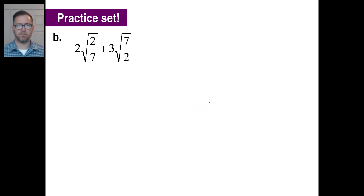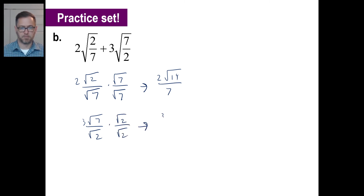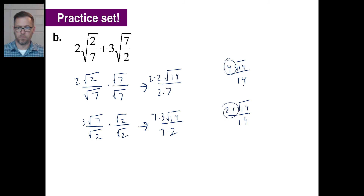Go ahead and pause it and try B — see what you get for that. I'll just go right down and go 2 square root of 2 over square root of 7, then multiply that by square root of 7 and square root of 7. That gives me 2 square root of 14 over 7. This one: 3 square root of 7 over the square root of 2, multiply by square root of 2 over square root of 2. That gives me 3 square root of 14 over 2. The common denominator is 14. Multiply by 2 here and 2 there, then 7 here and 7 there. That gives me 4 square root of 14 over 14. This gives me 21 square root of 14 over 14. The 4 and the 21 together: 25 square root of 14 over 14.